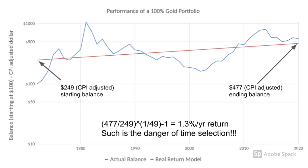The significance of this is that it removes the impact of luck on the part of the person who started in 1971, but it also removes the significance of bad luck on the part of the person who started in 1980 or 1981. When looked at this way, we can remove some of the time variation from the estimated return. Instead of it costing $100 to buy gold in 1971, it would cost $249 to buy the same amount. This is a mathematical fiction, but it makes the result more robust to arbitrary time selection. At the end, the person would sell the gold for $477, leading to a rate of return of 1.3% per year instead of 4% per year. And such is the peril of arbitrary time selection.